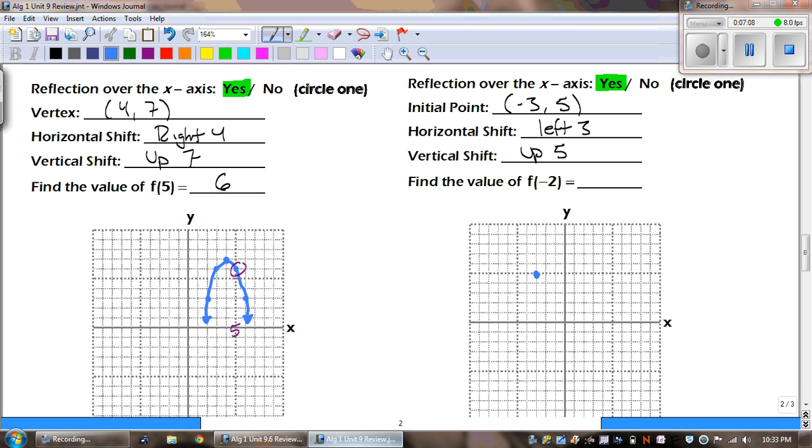Okay, so remember, there's a reflection here. So, we're going to go down 1, right 1. Whenever we're doing square root graphs, we always go to the right. And then my next point is down 1, right 3. Okay, let's go ahead and draw your graph.